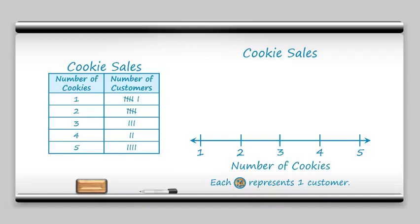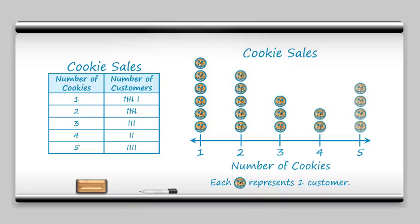So how many customers bought one cookie? We're just going to put that above the one and it's six. So one, two, three, four, five, six customers bought one cookie and then how many customers bought two? That's five. So five customers there and then three customers on three and two customers on four and four customers on five.